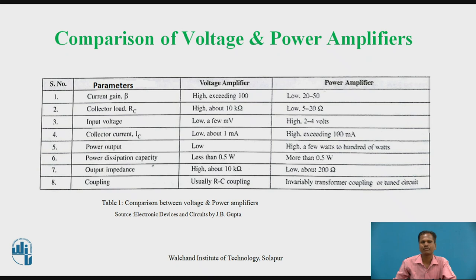Input voltage for a voltage amplifier is a low level signal, in the range of 10 milli volts. For a power amplifier, the input signal voltage level is about 2 to 4 volts. Collector current IC: for a voltage amplifier, collector current is low, about 1 milli ampere; for a power amplifier, the collector current is high, above 100 milli ampere. Power output: for a voltage amplifier, the power output is low, and for a power amplifier, power output is high — about hundreds of watts.